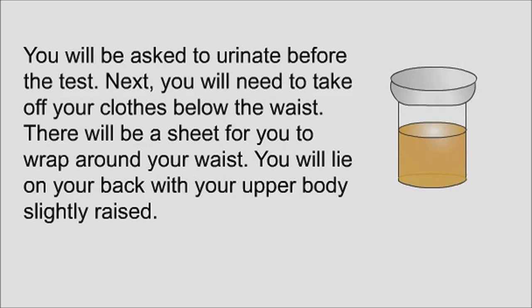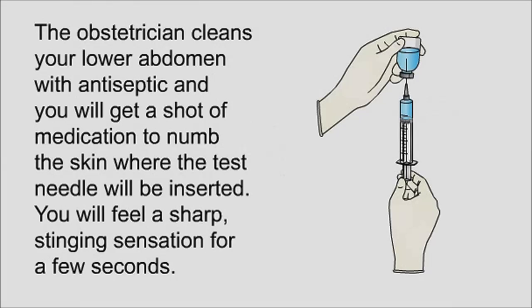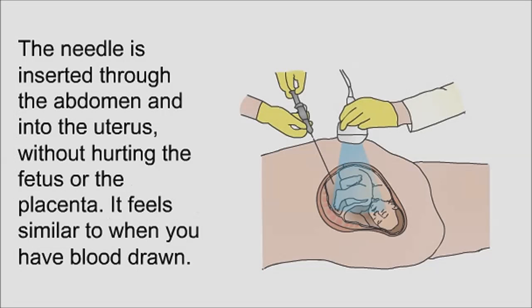You will lie on your back with your upper body slightly raised. The obstetrician cleans your lower abdomen with antiseptic, and you will get a shot of medication to numb the skin where the test needle will be inserted. You will feel a sharp stinging sensation for a few seconds. The needle is then inserted through the abdomen and into the uterus without hurting the fetus or the placenta — it feels similar to when you have blood drawn.